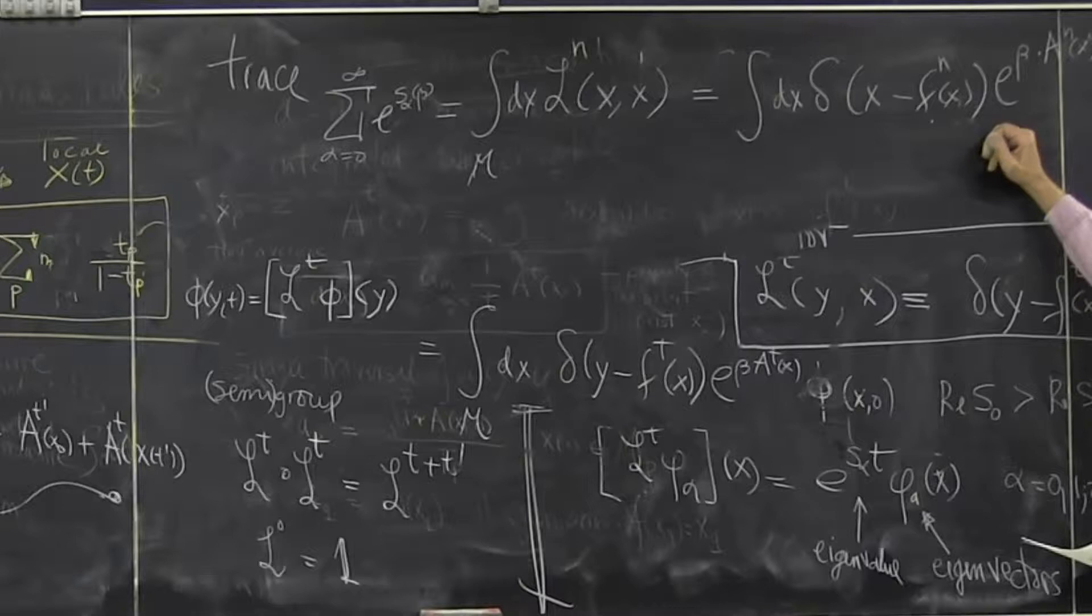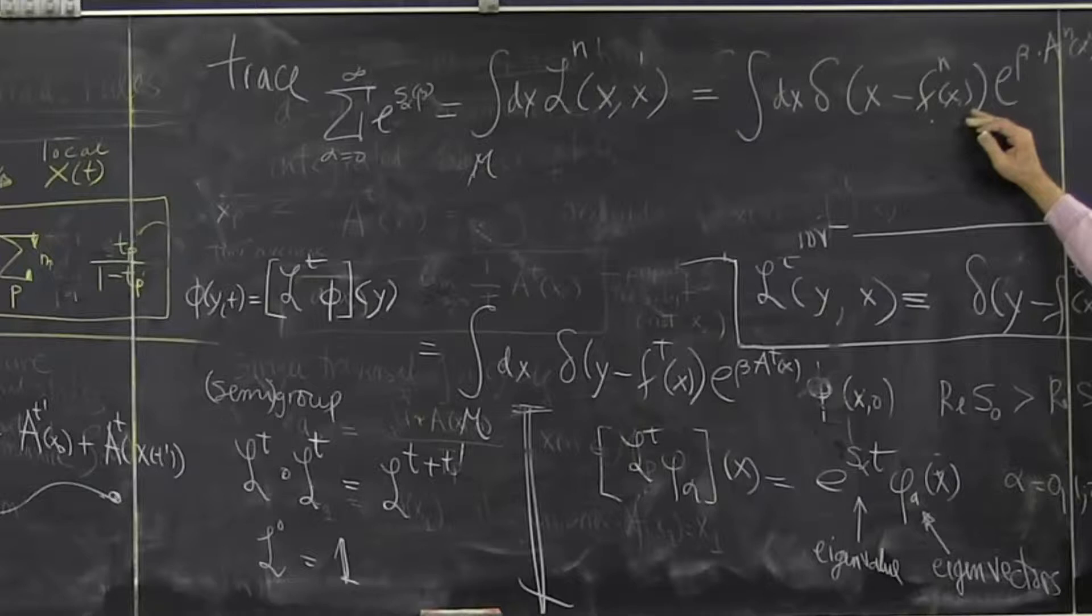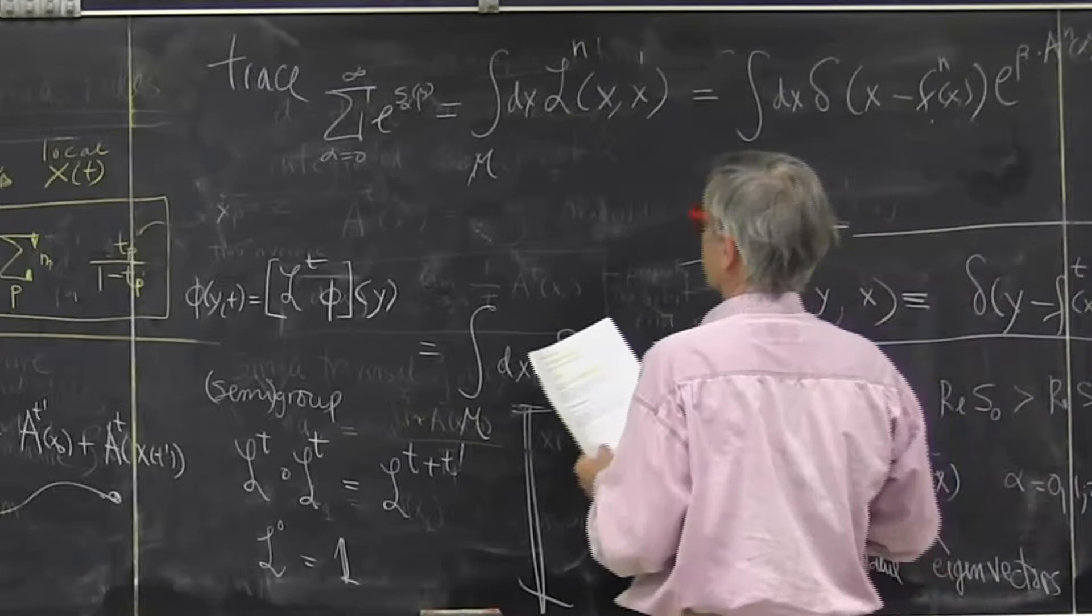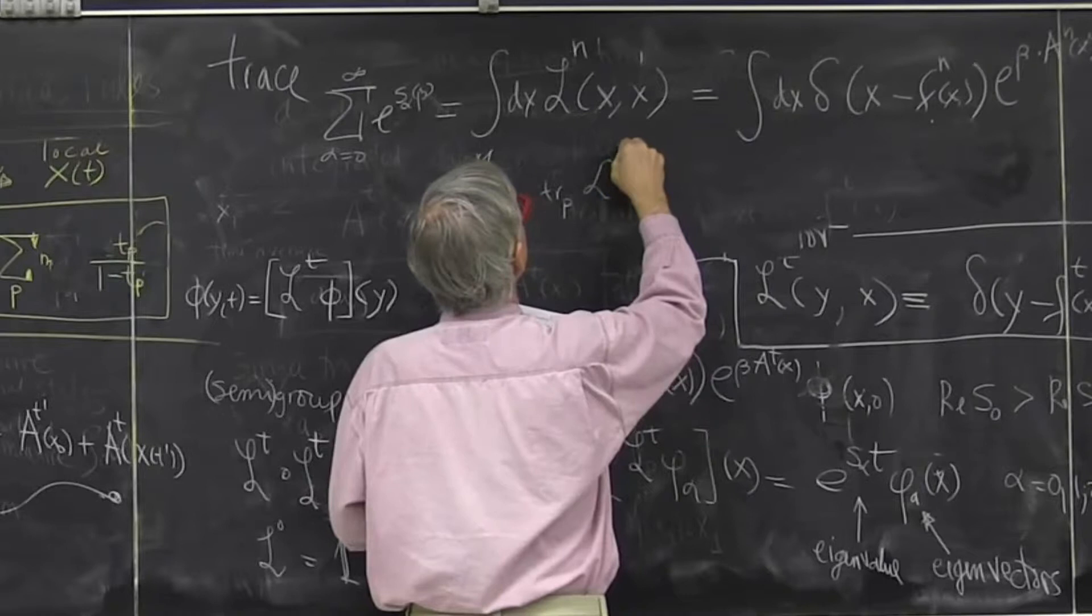I like them because they're invariant objects. But they're a little bit difficult to handle. But here we are forced. We have to do them. Now in the neighborhood of every periodic point, what happens? So let's look at neighborhood. Trace, in the neighborhood of a periodic point.